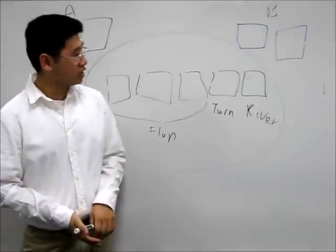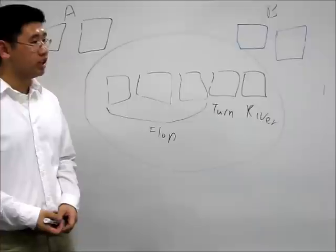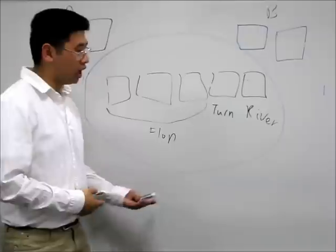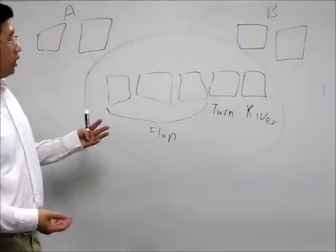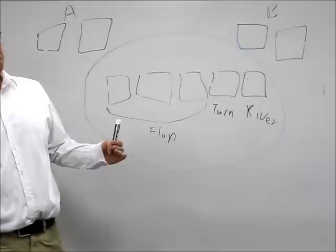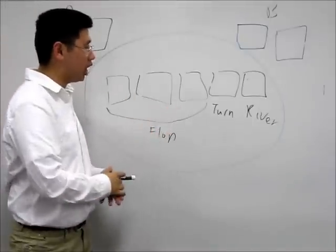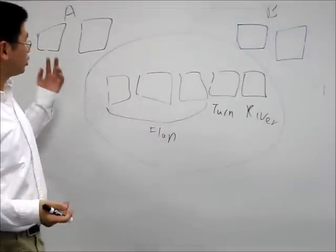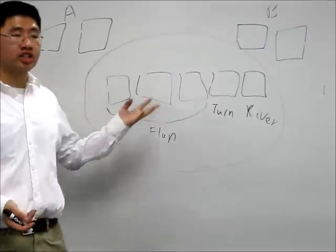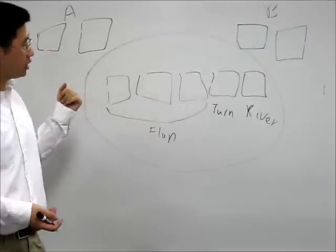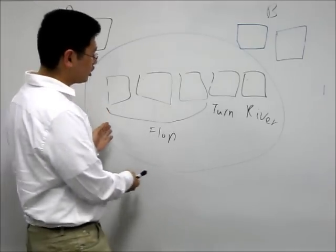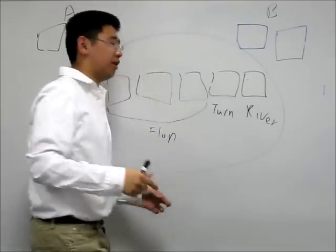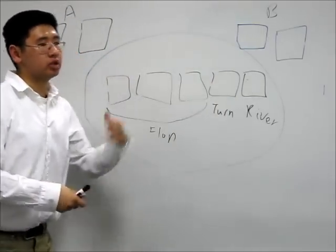Now we're going to calculate the probability of winning in a game of one-on-one poker. The game we're playing is Texas Hold'em. Both people have two cards in their hand and five cards on the board. The five-card hand is determined by the two cards in the person's hand and the best three cards on the board. After the first two cards put on the board there's a round of decision-making, then the fourth card, another round of decision-making, and then the fifth card to determine the winner.